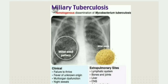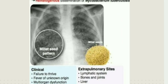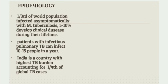You can see the miliary seed pattern over the chest X-ray in this diagram. The frequency of extra-pulmonary TB is higher in HIV patients, at about 20 to 50%. Regarding epidemiology, about one-third of the world population is affected asymptomatically with this bacteria, but only 5 to 10% develop clinical disease during their lifetime. India is the country with the highest TB burden, accounting for one-quarter of all global TB cases.